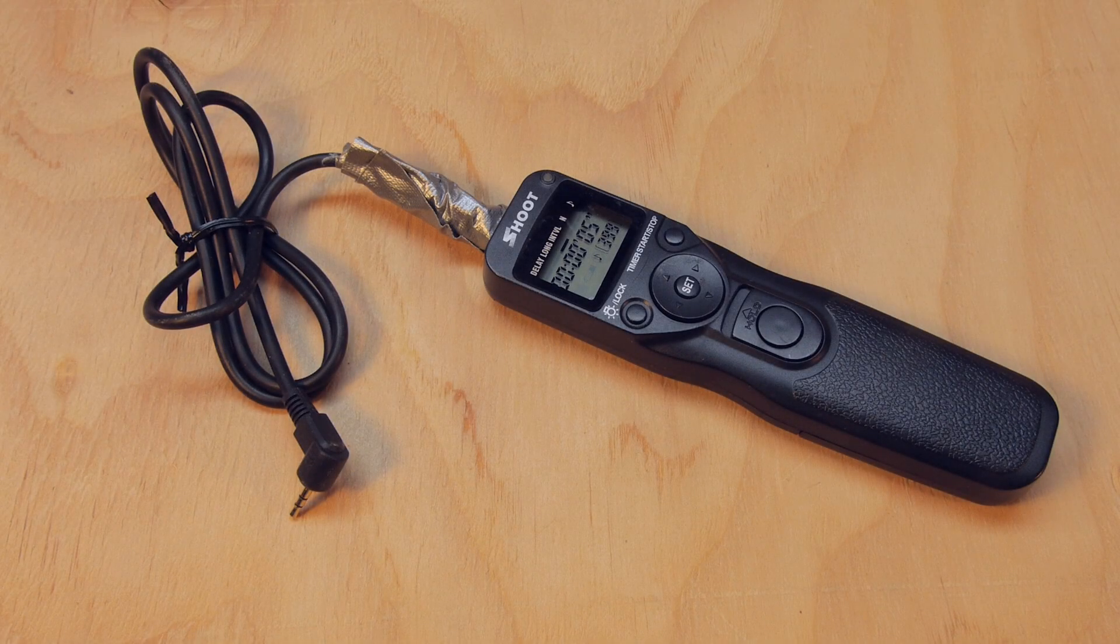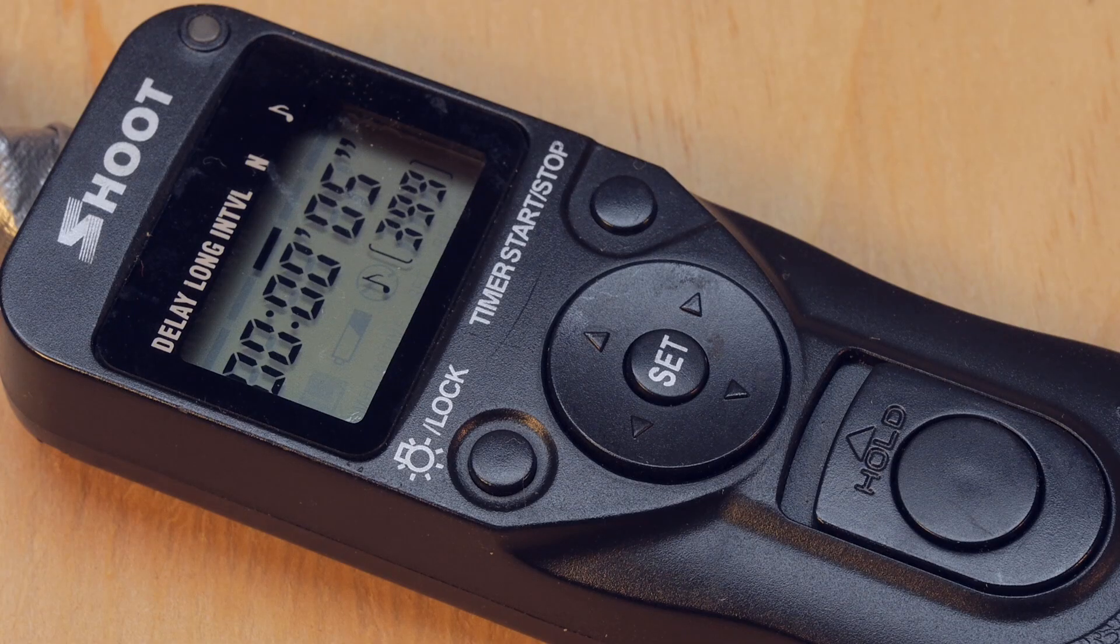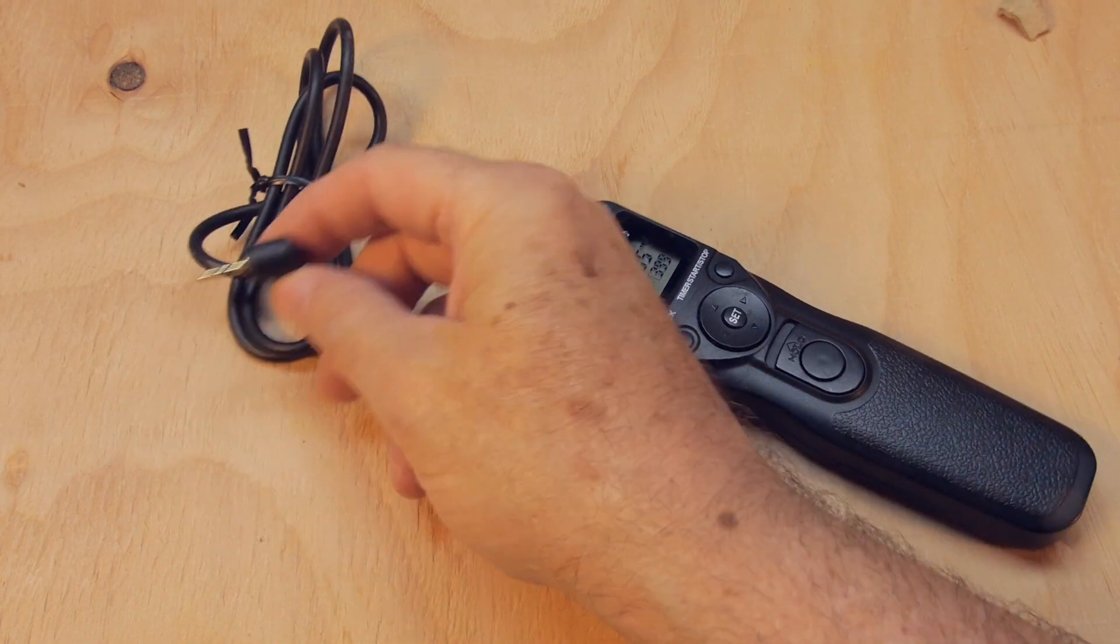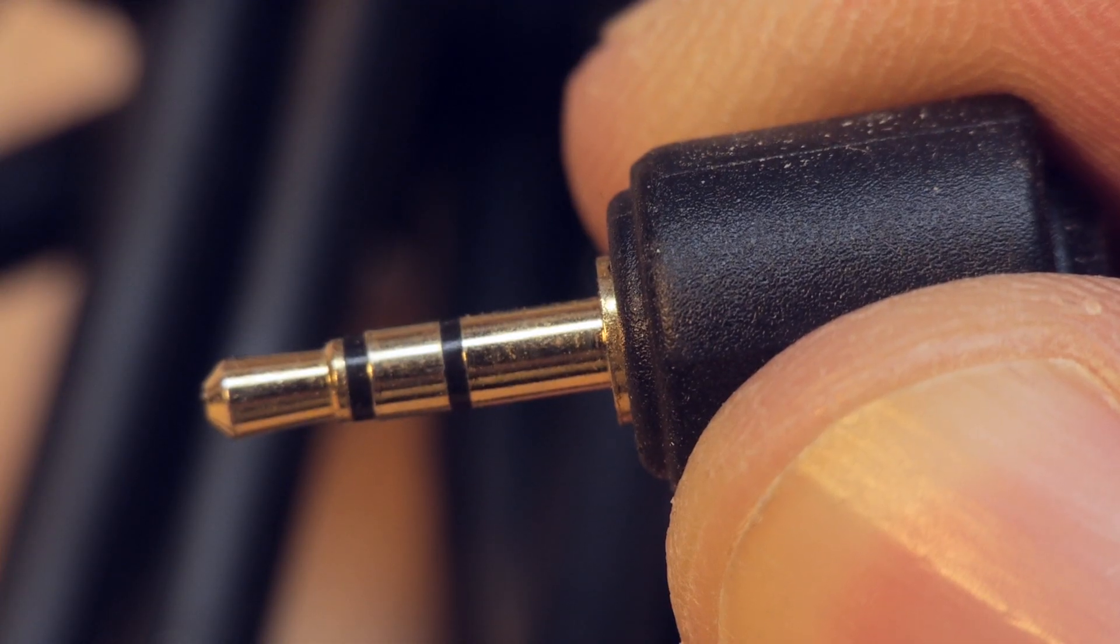So I have one of these $30 Chinese intervalometers of the sort you can easily find on eBay, and it's worked quite well for me. It's got a 2.5mm plug, which goes into my Pentax DSLR.